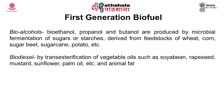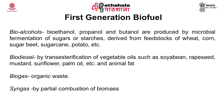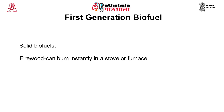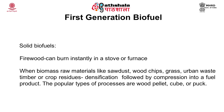Biodiesel is produced by the transesterification of edible vegetable oils, also known as straight vegetable oils, like soybean, rapeseed, mustard, sunflower, and palm oil. Biogas produced from organic waste also comes under first generation biofuel. Syngas, produced by partial combustion of biomass, is another example. Solid biofuel such as firewood is also first generation. When biomass raw materials like wood chips, grass, urban waste, or crop residues undergo densification and compression into fuel products such as wood pellets, cubes, or pugs, these also fall under first generation biofuel.